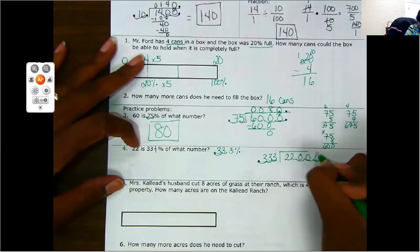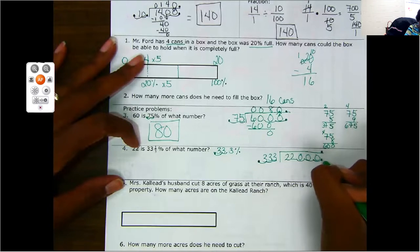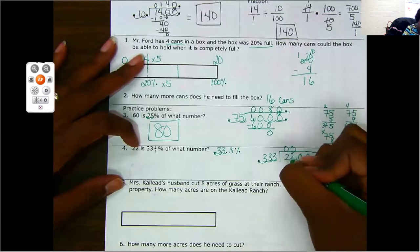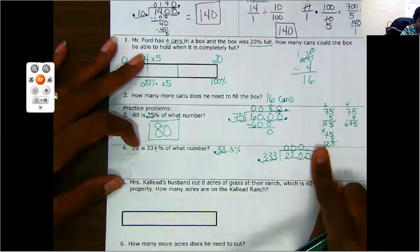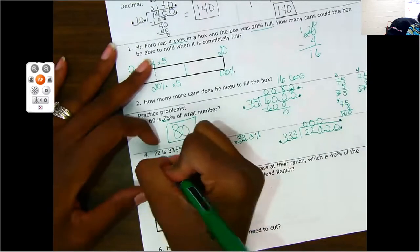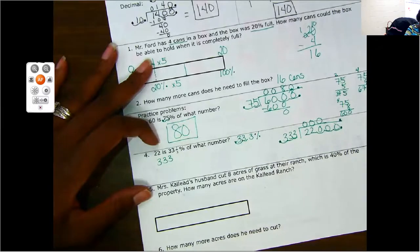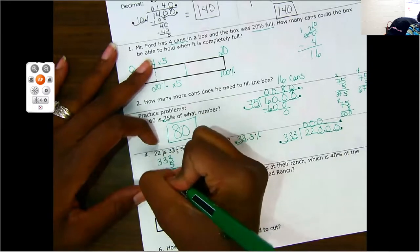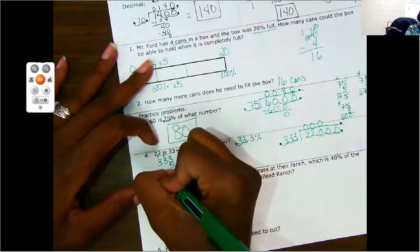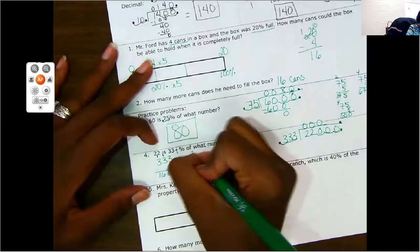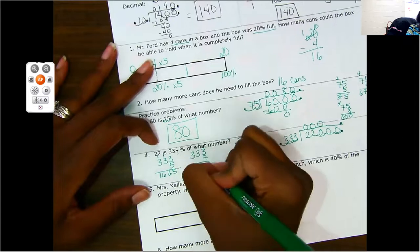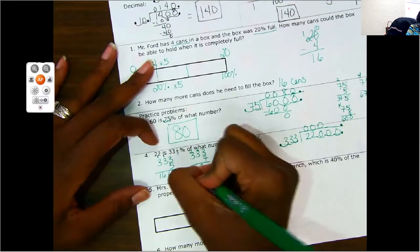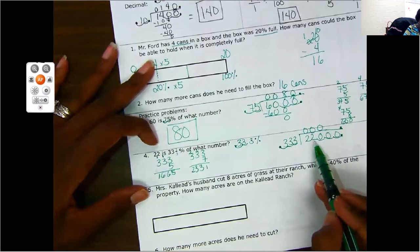333 will not go into 22. It will not go into 220. So I need to start at 2200. Again, some scratch work. Let's do times 5. 15, 16. So that's 1665. Let's do 7. 21, 22, 23. 2200. So that's too much. So we need to go with 6. I'll use this one. 18, 19. So we got 1998.